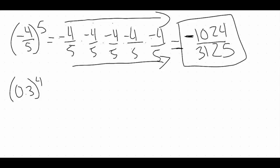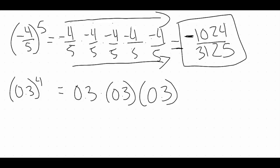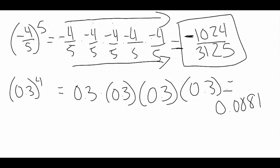Moving down to our bottom example: that is 0.3 raised to the fourth power. Our base is 0.3, and we're going to multiply it by itself four times: 0.3 times 0.3 times 0.3 times 0.3. Plugging this into the calculator, I'm getting 0.0081 as the final answer — so 0.3 times itself four times gives us 0.0081.